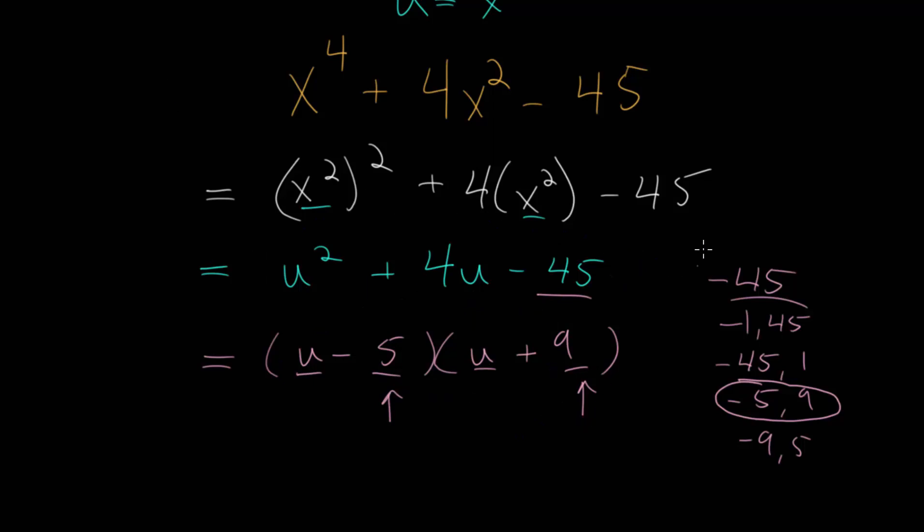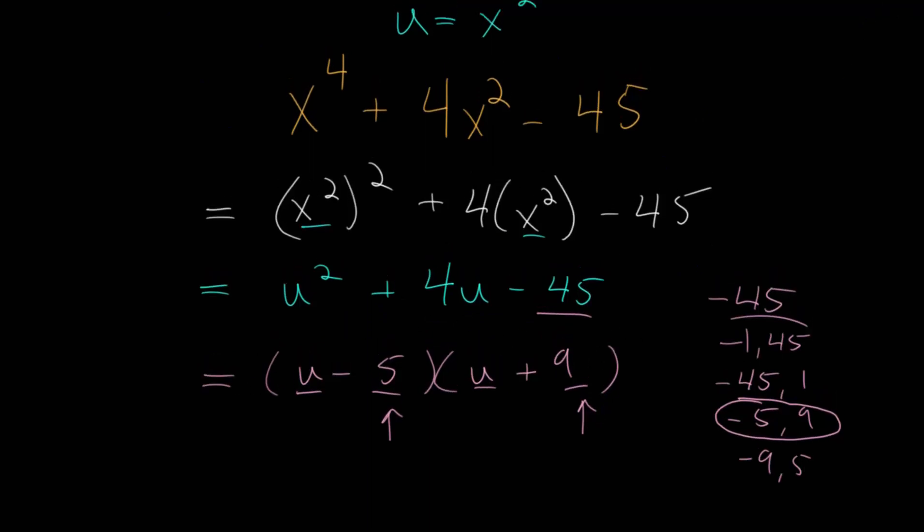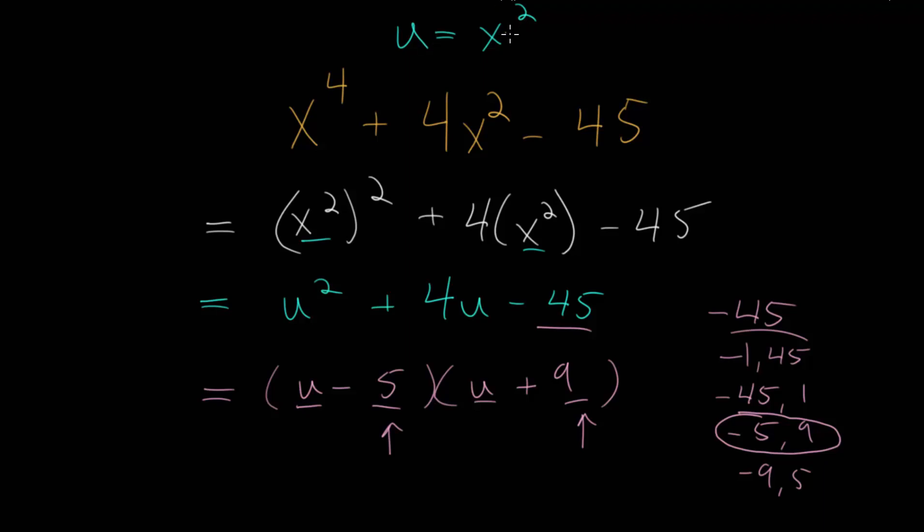The original problem started with the variable x, and right now we have this factored in terms of u. Let's remember the substitution we made. Everywhere we see a u, we plug x^2 back in. So we get (x^2 - 5)(x^2 + 9).